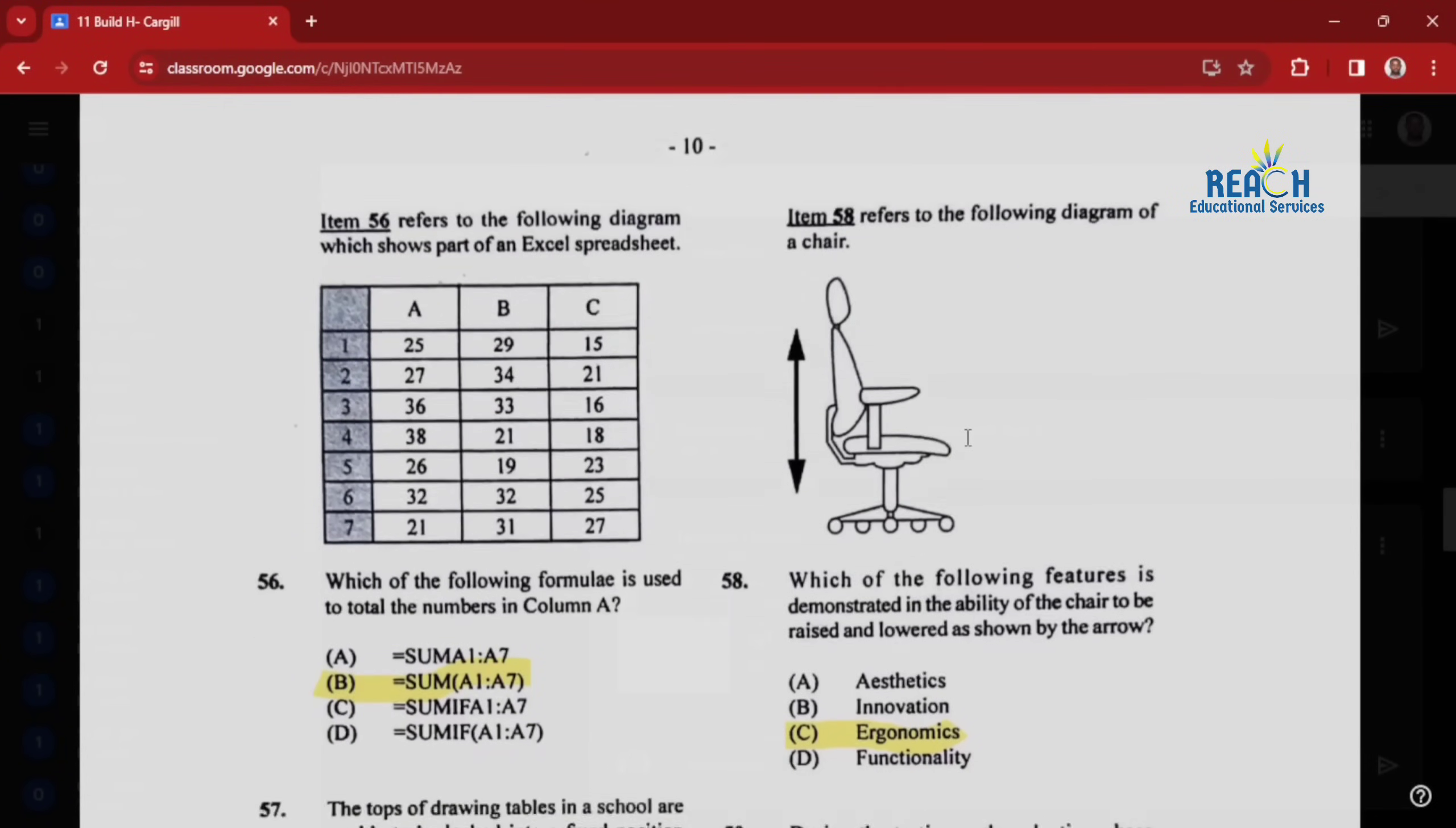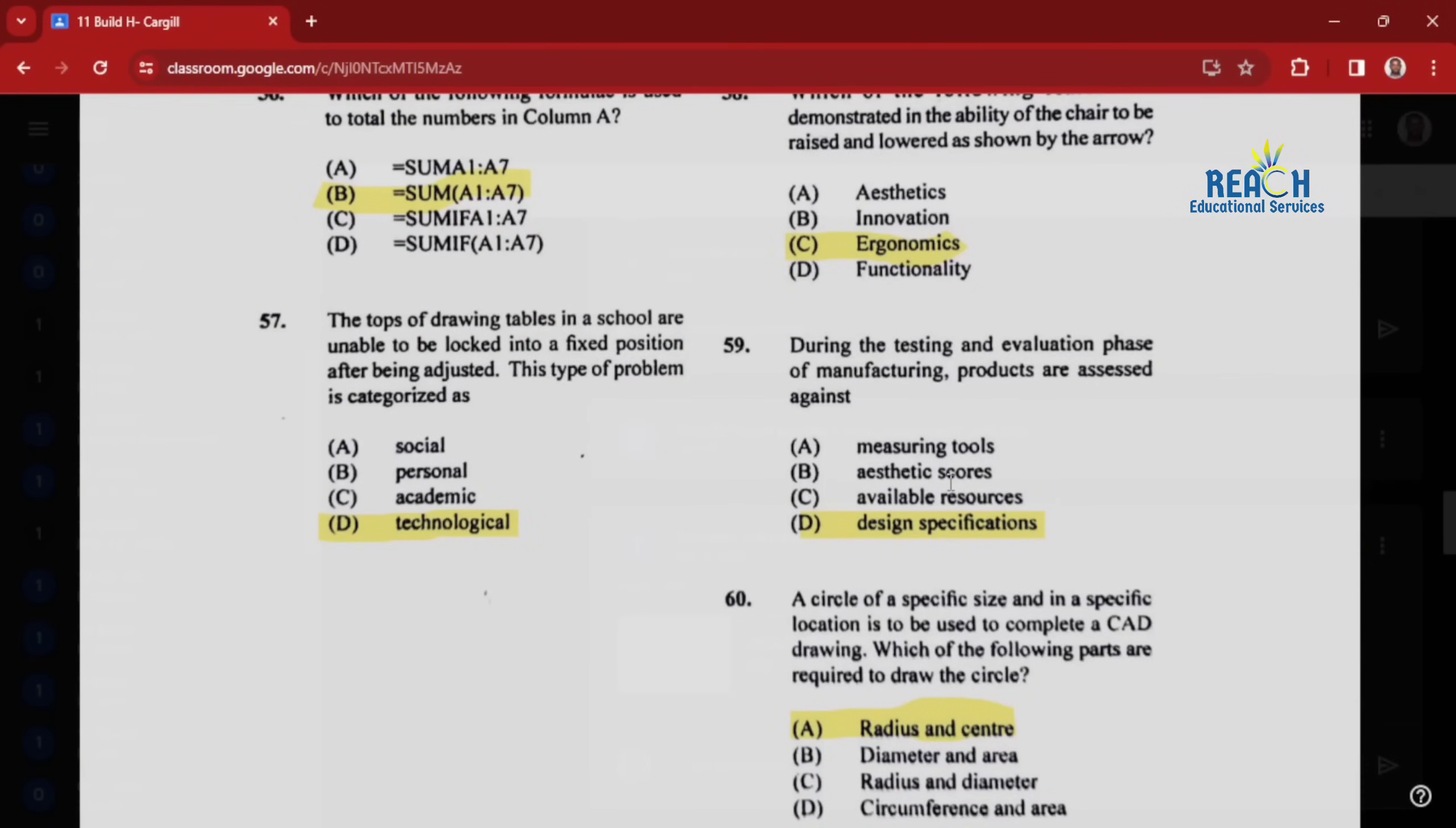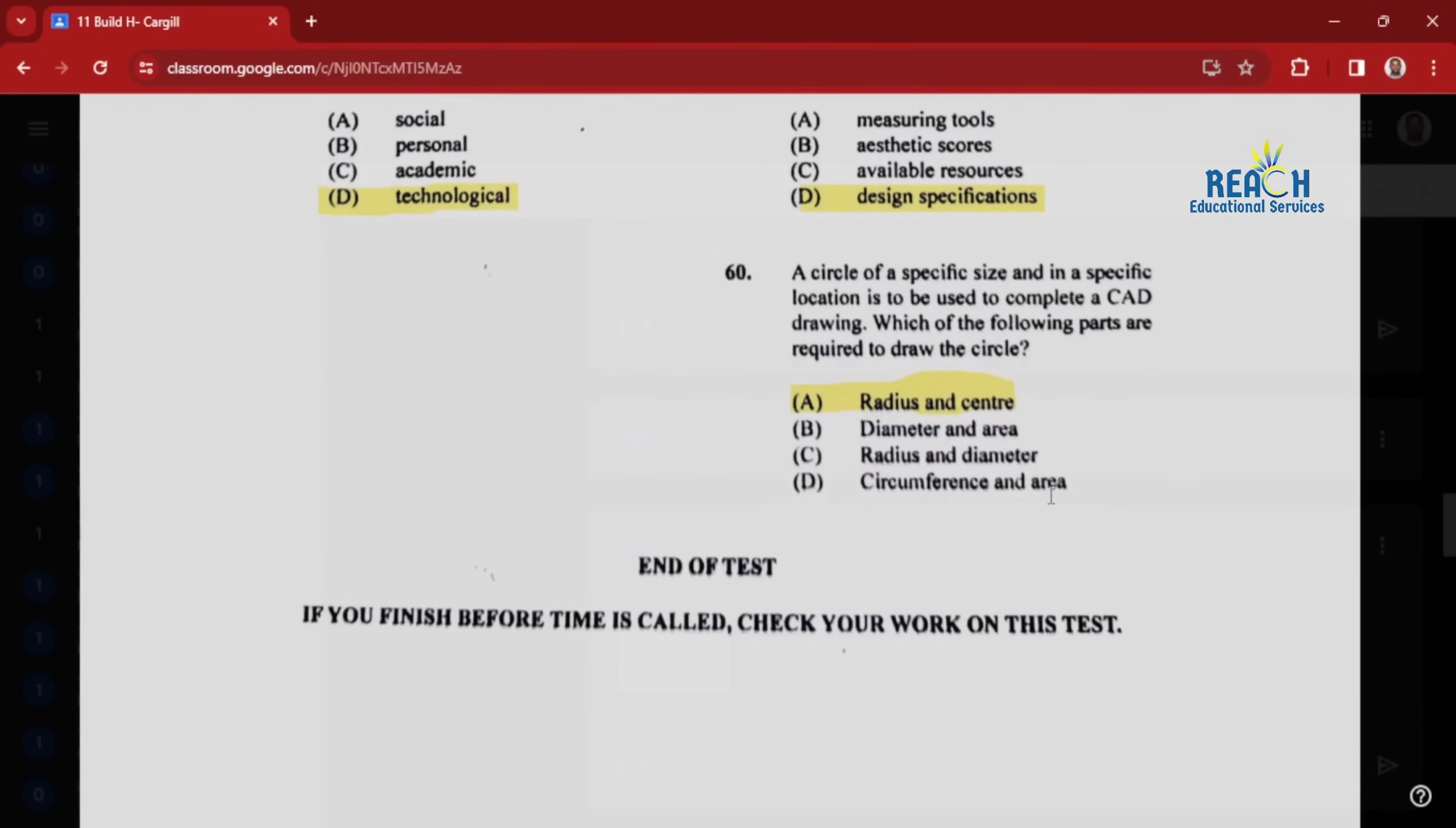Item fifty-eight refers to the following diagram of a chair. Which feature is demonstrated in the ability of the chair to be raised and lowered as shown by the arrow? Ergonomics. Question fifty-nine: during the testing and evaluation phase of manufacturing, products are assessed against the design specifications. Are the designs meeting the design specifications? Question sixty: a circle of a specific size and in a specific location is to be used to complete a CAD drawing. Which parts are required to draw the circle? The radius and the center.